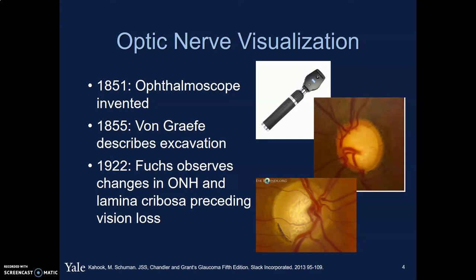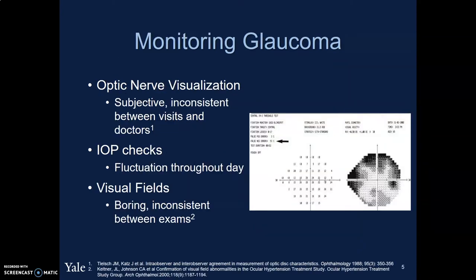A little bit about the history. Optic nerve visualization didn't really happen until around 1851 when the ophthalmoscope was invented. Shortly after, in 1855, Dr. von Graf probably describes an earlier finding of glaucoma, noting some excavation of the optic nerve. It wasn't until around 1922 when Dr. Fuchs observed changes in the optic nerve head and lamina corbosa that were found to be preceding vision loss, and this was kind of the first big association with glaucoma.